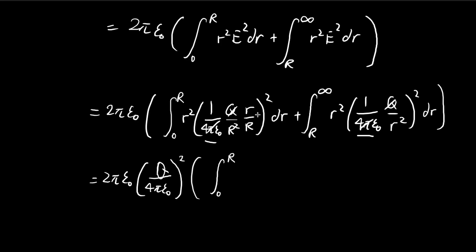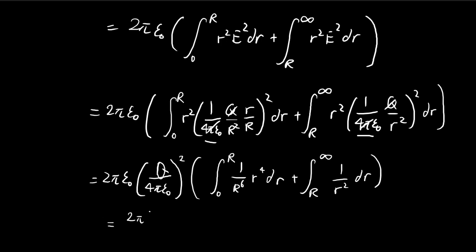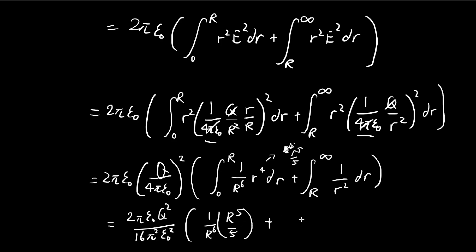Now let's focus on the integrals. Inside we have r to the power of three, which when squared gives r to the power of six; combined with r squared that gives r to the power of four, then one over r squared from big R squared. Integrating r to the power of four gives r to the power of five over five, so substituting big R we get R to the power of five over five. For the outside term, integrating one over r squared gives negative one over r, evaluated from R to infinity.